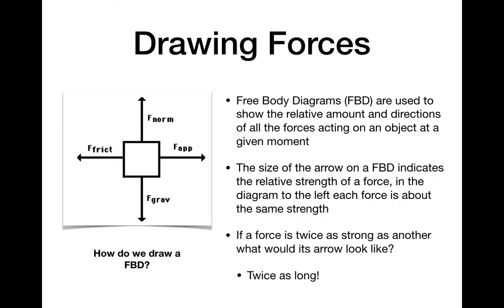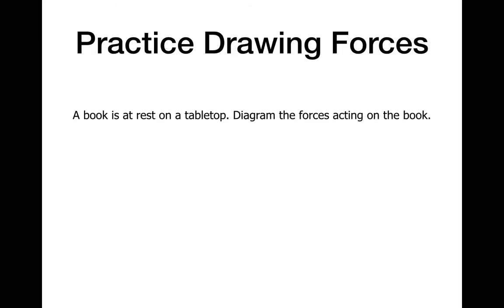So draw a little free body diagram example. I like to draw them as squares - it gives you a clear starting and ending point. In the worksheet we did, it was little circles, that's also okay. Here's some practice questions. We have a book at rest on a tabletop - diagram the forces acting on the book. Take a minute, pause the video, draw it out. Okay, so check your drawing against this one. I have my book here and I have a normal force on the table acting on the book holding it up and gravitation pulling it down.